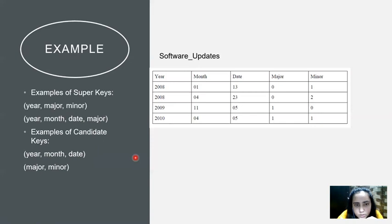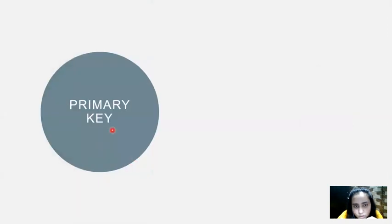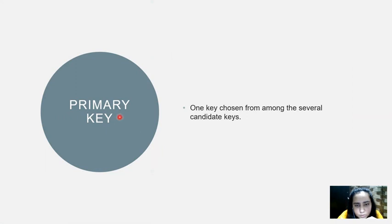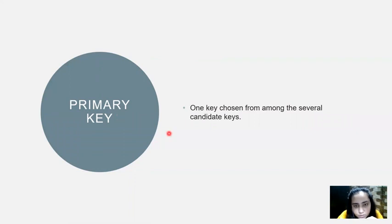Now we move on to something very important in the relational model: the primary key. A primary key is one key chosen from among the several candidate keys. Finding super keys and candidate keys is the groundwork for finding the primary key, which is the most important key in your table — the one you define when you create the database. From all the candidate keys you find, you select one to be the primary key of your table.